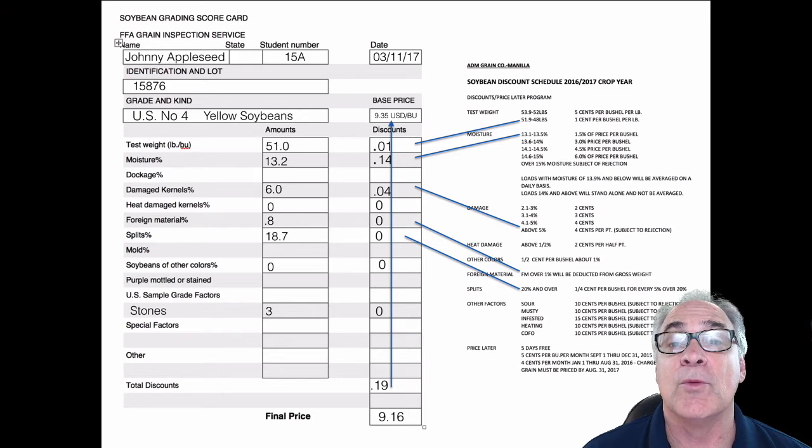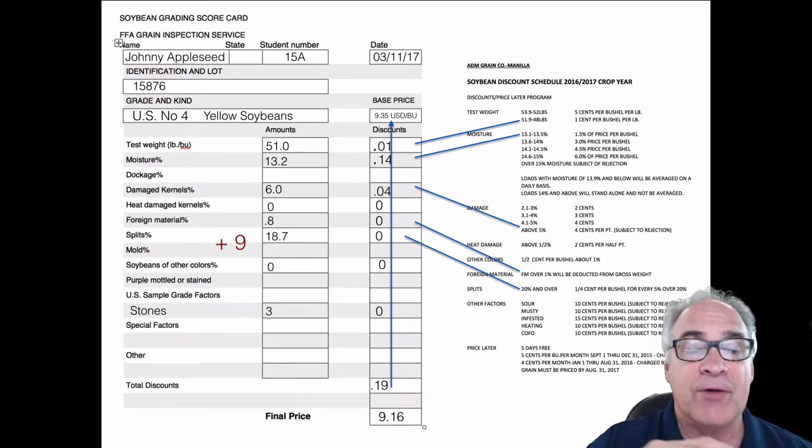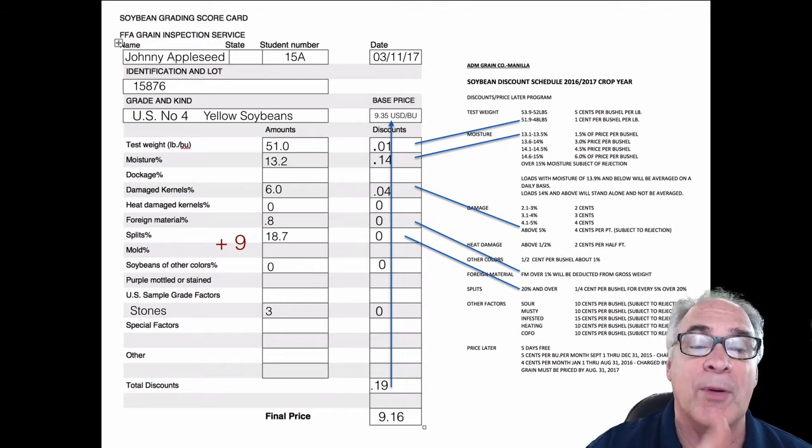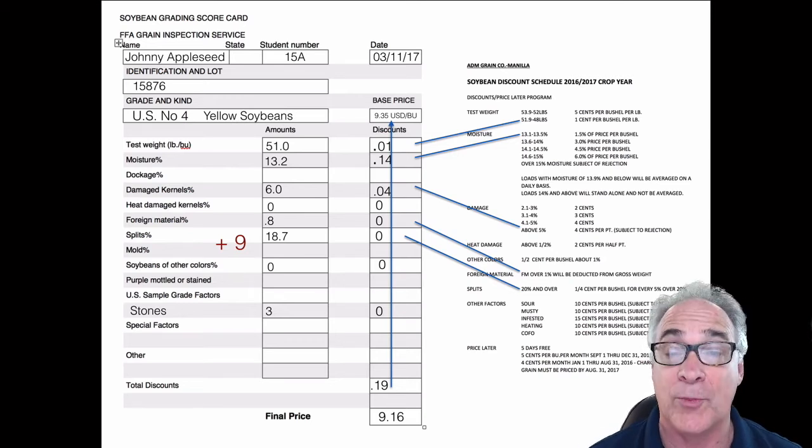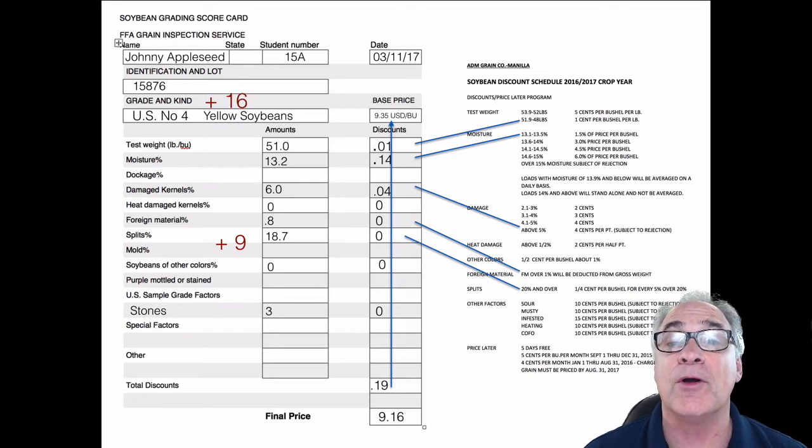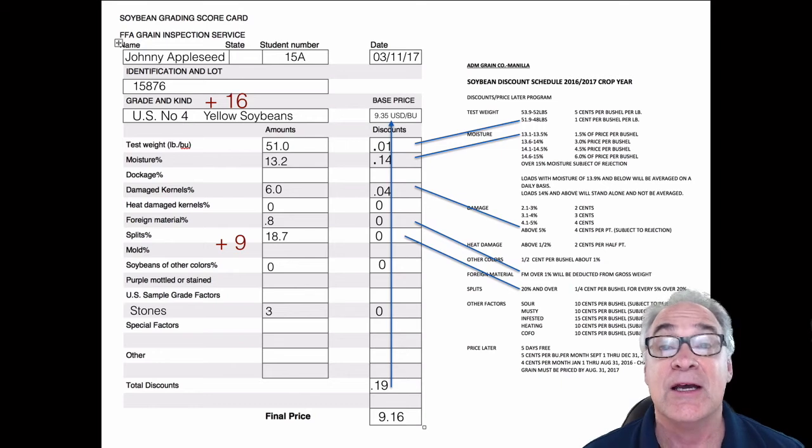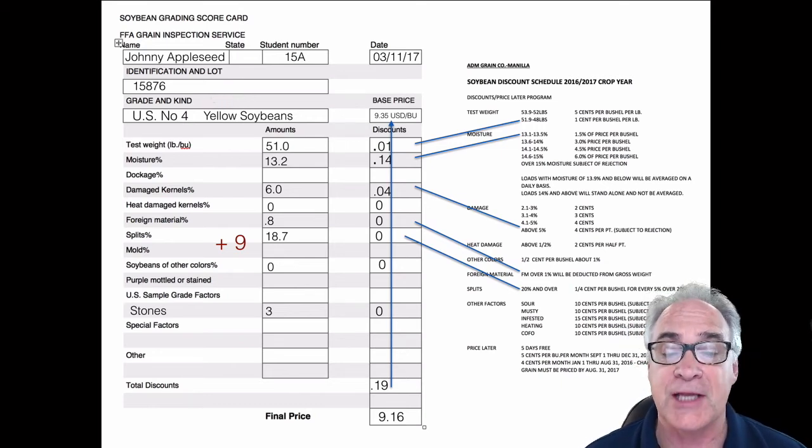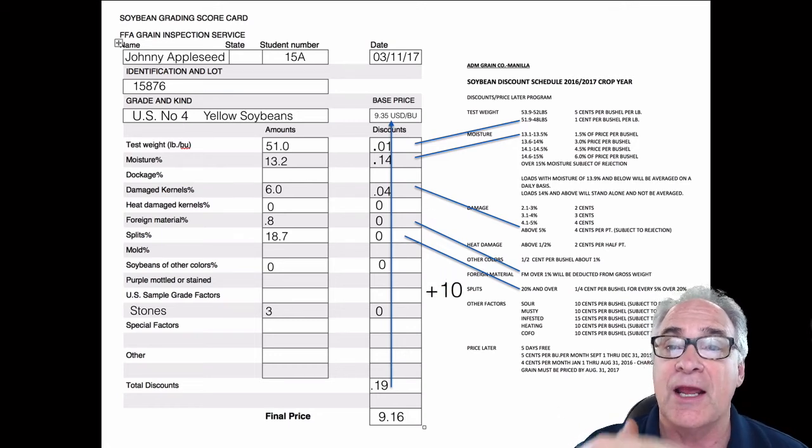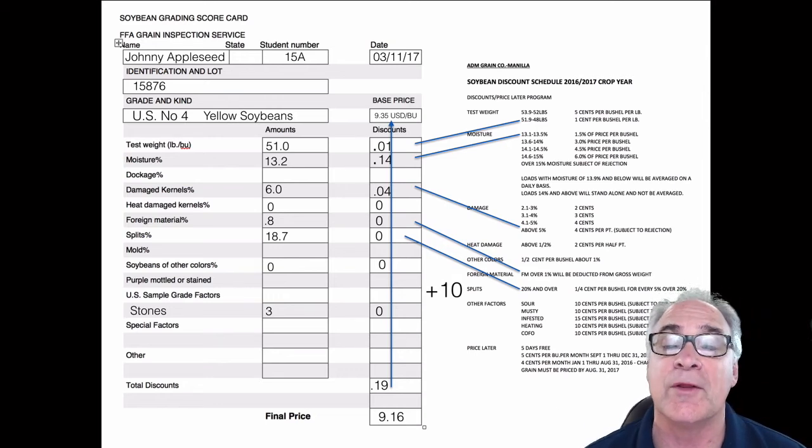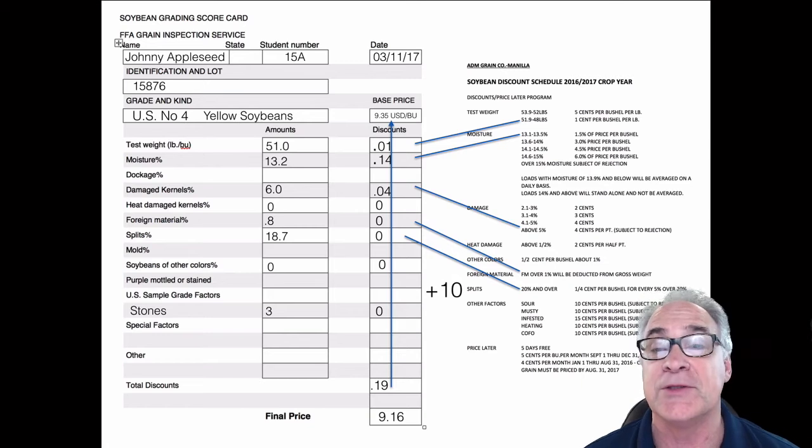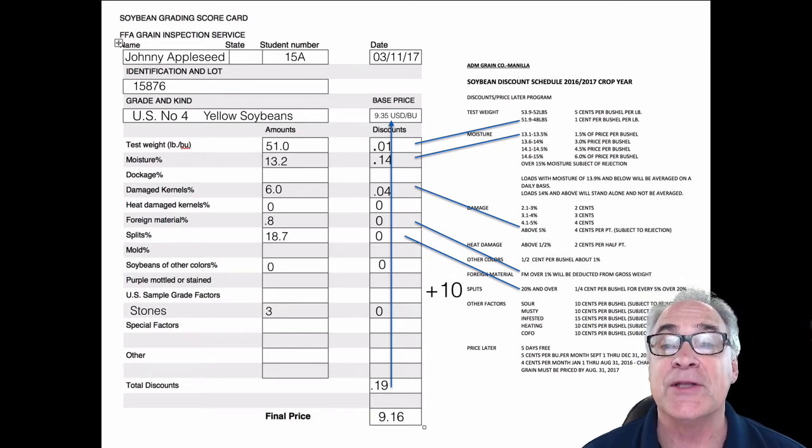So when we're all said and done, every one of these amounts there should be one point for each one of those. So what you're going to do is add up the correct answers, that would be nine total points, which leaves 16 points for the kind and also grade. And if you have US number four and yellow soybeans, that would account for 25 points. On the other side of the coin, on the discount side, you'll notice that we have 10 slots or 10 areas in which you can be graded, one point for each one of those cells. That includes the base price all the way to our total discount. That means there's 15 points left for the final price.